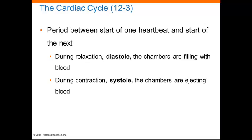The next section looks at the cardiac cycle, which is the period between the start of one heartbeat and the start of the next. It includes alternating periods of contraction, called systole, and relaxation, called diastole. Blood flows due to increases in pressure in one chamber above the pressure in the next chamber.